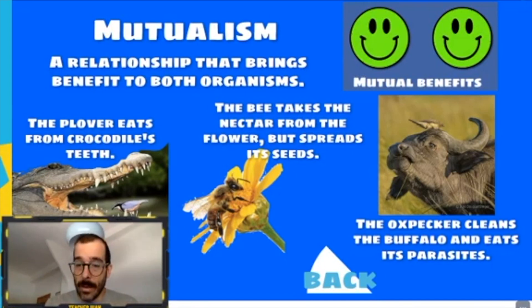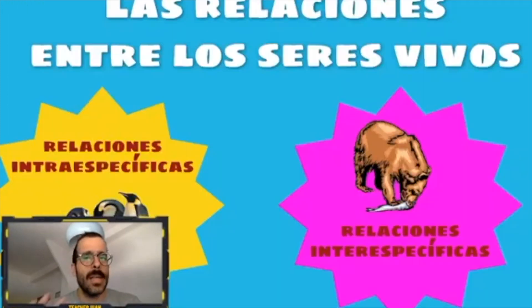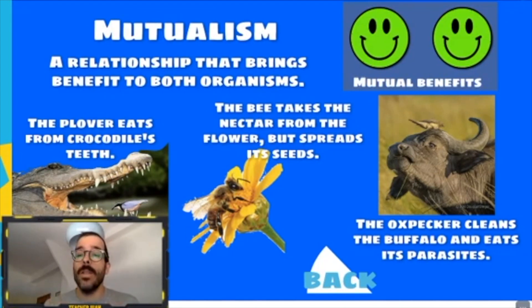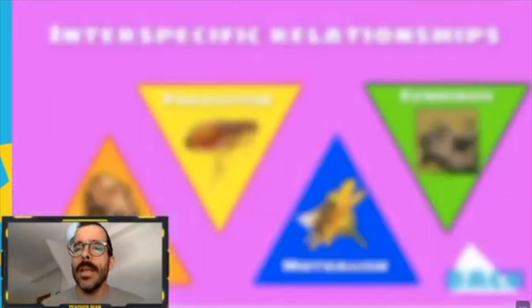On the right, we have the oxpecker, which cleans the buffalo by eating its parasites — the fleas and other parasites living on the buffalo in the savannah. The oxpecker gets food and the buffalo gets cleaned, so both are having benefits. Now we have a very different relationship: symbiosis.